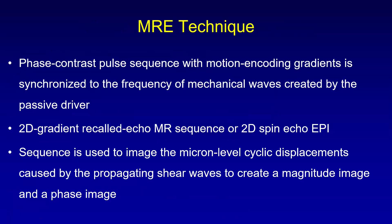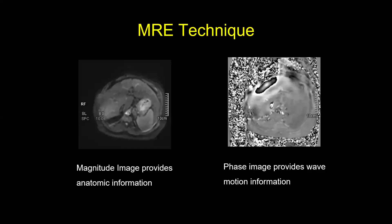A phase contrast pulse sequence with motion encoding gradients is synchronized to the frequency of the mechanical waves created by the passive driver. You can use a 2D gradient recalled echo MR sequence, typically with a 1.5 Tesla, or a 2D spin echo echo-planar imaging sequence. This images the micron-level cyclic displacement caused by the propagating shear waves to create a magnitude image and a phase image.